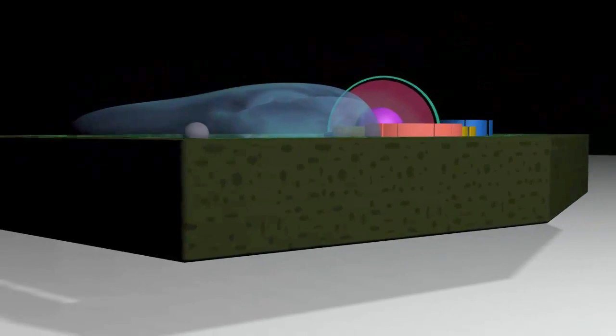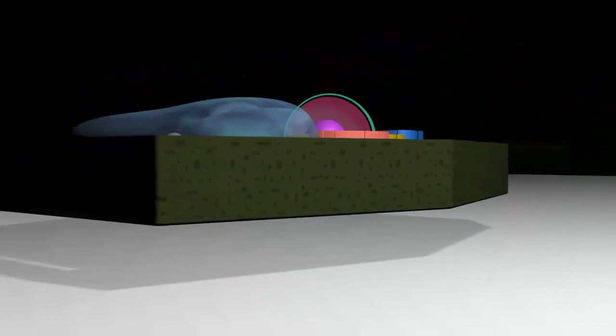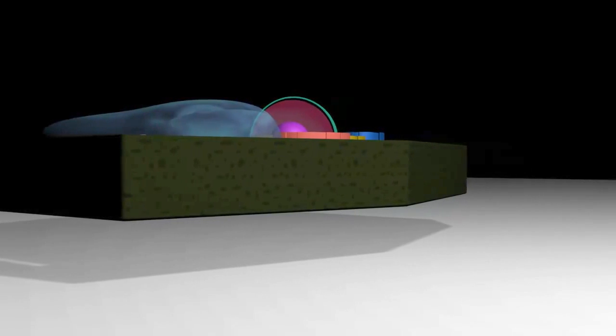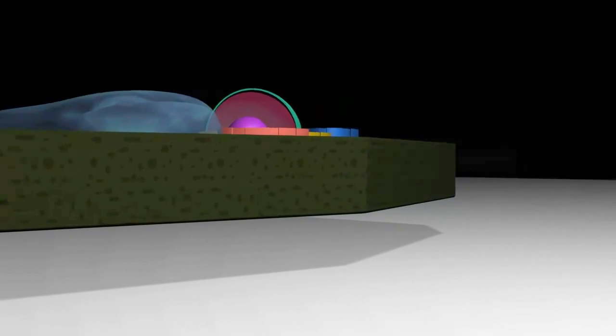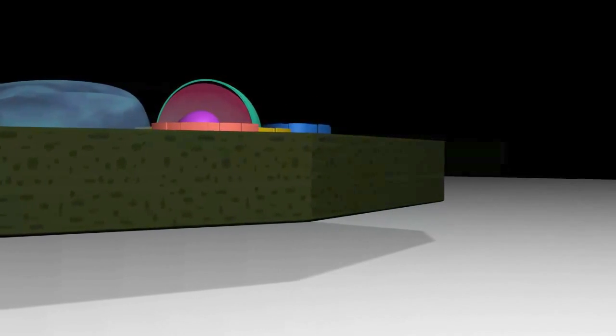A main function of the cell wall is to act as a pressure vessel, preventing overexpansion when water enters the cell. Although the material of the cell wall varies depending upon species, it serves the same purpose.